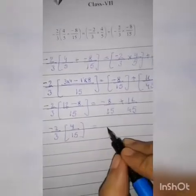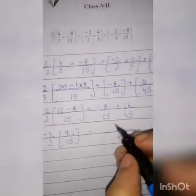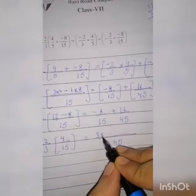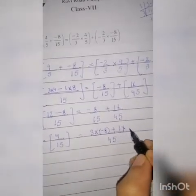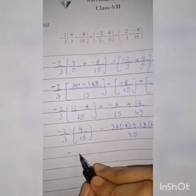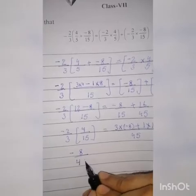Then for 15 and 45, we'll write 45. 45 divided by 15 gives 3. 3 multiply by minus 8 plus 1 multiply by 16. Now here we'll get: 2 times 4 is 8 over 15 times 3 is 45.